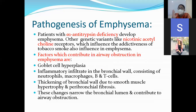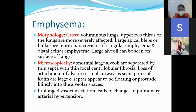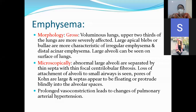Patients with alpha-1 antitrypsin deficiency develop emphysema. Factors which contribute to airway obstruction in emphysema are goblet cell hyperplasia, inflammatory infiltrate in the bronchial wall, thickening of the bronchial wall, and then finally destruction. In pathogenesis, there is a role of inflammation — especially leukotrienes B4, interleukin-8, and tumor necrotic factors — which cause activation of macrophages. Alpha-1 antitrypsin deficiency and antiproteases imbalance are key causes.